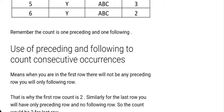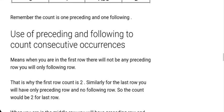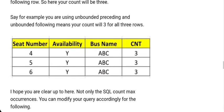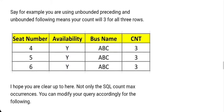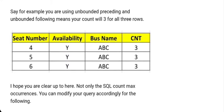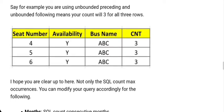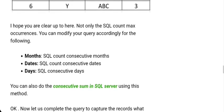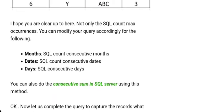You can also use unbounded preceding and unbounded following instead of just one preceding and one following. In that case you get count as 3 for all rows, because there are only three consecutive available rows. Similarly, you can apply this same approach to capture consecutive months, consecutive dates, and consecutive days as well.